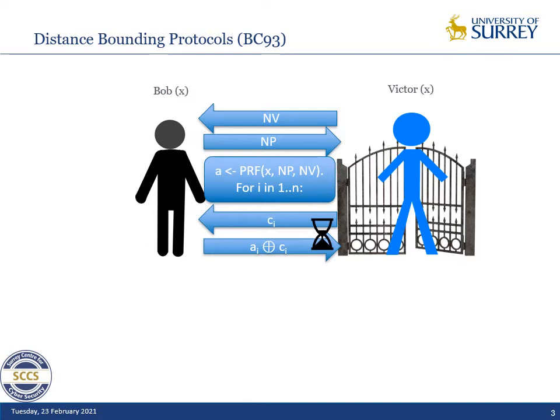Then for n rounds, we have the verifier Victor sending a one-bit challenge CI and expecting a response depending on the secret key and on the challenge value — so for instance, AI XOR CI, where AI is the i-th bit of A. This exchange is timed so that Victor can compute an upper bound on the distance of Bob and thereby prevent relay attacks.